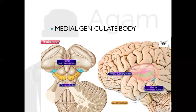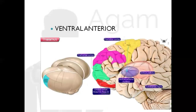Next, moving on to the motor relay nuclei. First is the ventral anterior nucleus: its main role is programming of movements controlled by the basal ganglia. It receives afferents from substantia nigra, globus pallidus, and also from the cerebellum, and projects to the premotor and prefrontal cortex and also to the primary motor area. It is the nucleus of motor control.